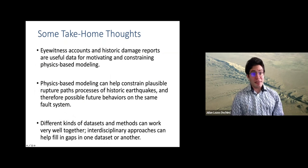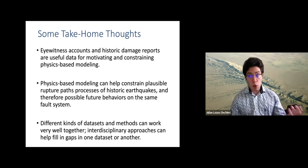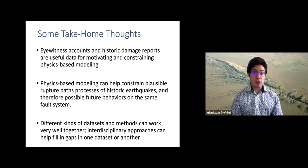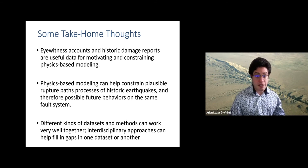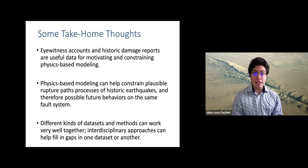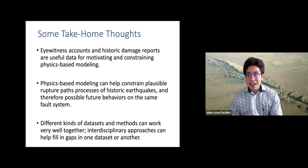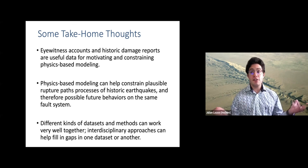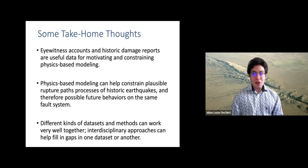Some take-home thoughts: eyewitness accounts and historic damage reports are really useful for motivating and constraining physics-based modeling. Because a model can do anything, the more data sets that can be used to constrain it, the stronger the model is, especially when considering real-world hazard. But on the other hand, physics-based modeling can help constrain the processes of historic earthquakes — understanding things that have happened in the past can help us constrain hazard for things in the future. I hope I've shown that different kinds of data sets can work really well together: different methods ranging from reading historic newspapers to really intensive physics-based modeling can be used together, and especially where there are gaps in one data set, interdisciplinary approaches can really meld those together in a cool way.